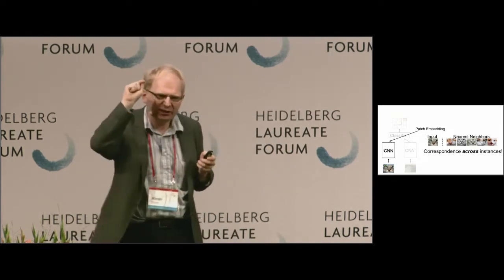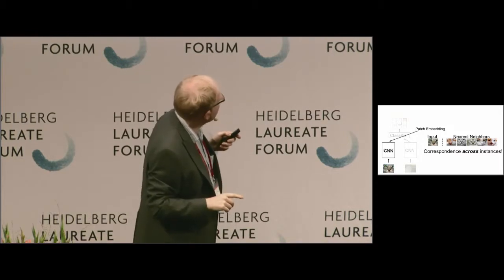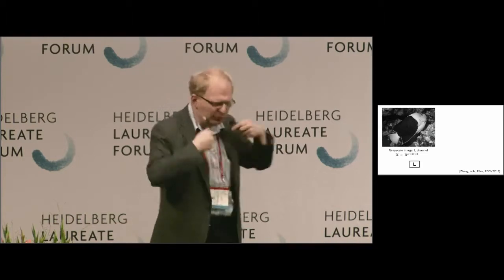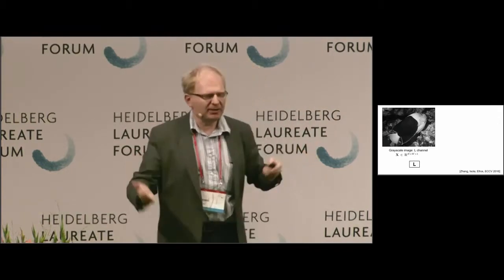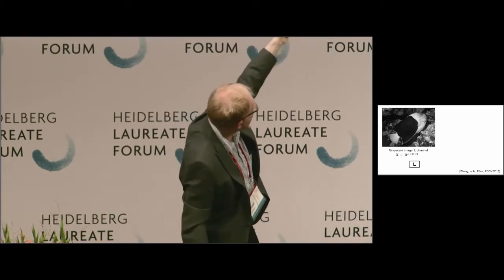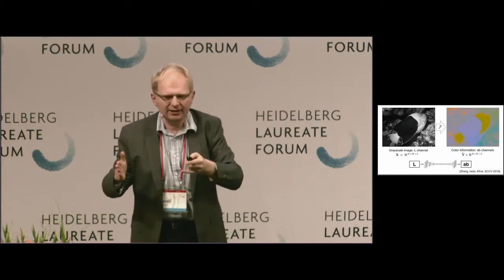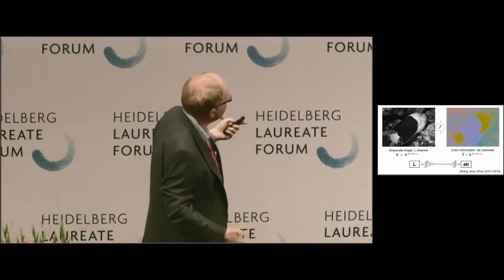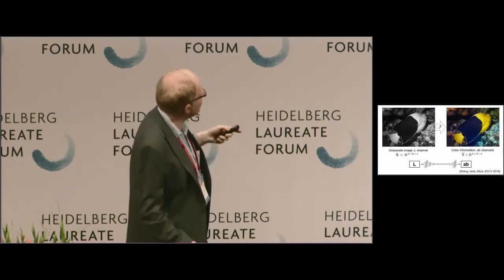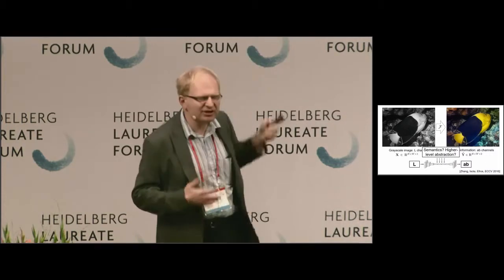But this is slow — you basically get one bit of information per training step. You can do better and faster. For example, predict all pixels at once: predict color from grayscale. Split an image into its grayscale and color components, then train a network to predict the color from the grayscale. This process labels the data for you — you can do this task forever because you don't need any labeled data.